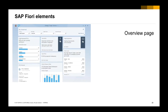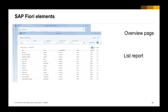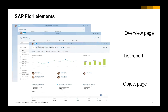The Overview Page gives you an overview of information in one single page with cards. The List Report allows you to filter data and shows it as a list of records. The Object Page gives you detailed information about an object record.